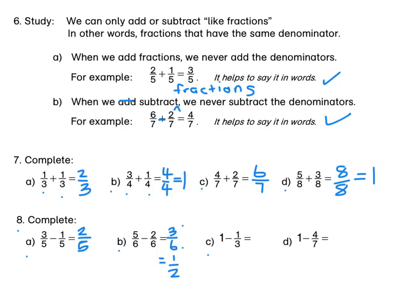For C, 1 whole minus 1 third. Are we working with thirds? So for 1 whole, I want you to think 3 thirds. And 3 thirds minus 1 third is 2 thirds. For D, 1 whole minus 4 sevenths. We are working with sevenths. So for 1 whole, I want you to think 7 sevenths. Minus 4 sevenths leaves us with 3 sevenths.